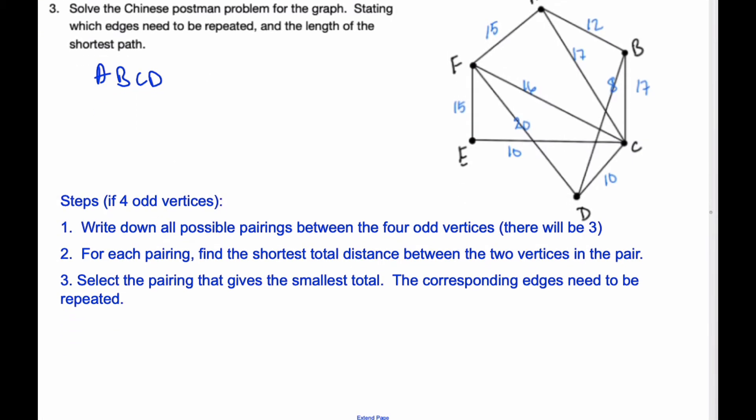So that means we are going to consider vertices A, B, C, D. We're going to consider the pair AB and CD. We're going to consider the pair AC and BD. And AD, so I am left with BC. So here are all the possible pairings.